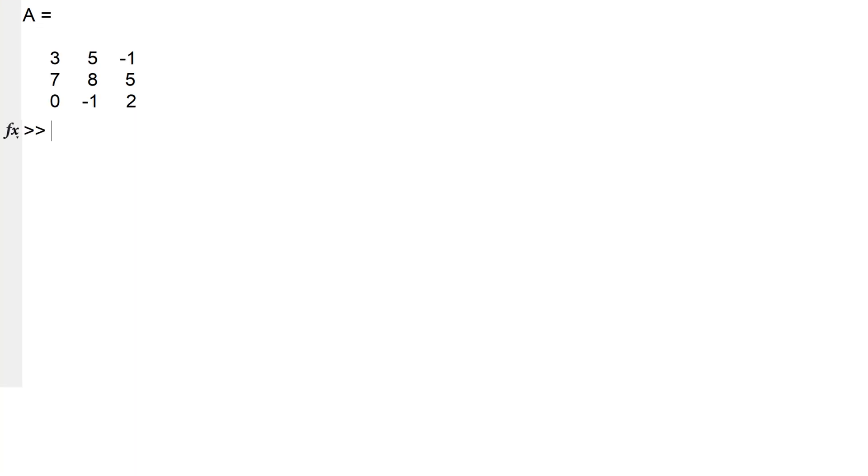You can also use square brackets or colon operator for multiple indices. For example, you can use square brackets 1 and 3 to access the first and third row, comma 3 for the third column, to see minus 1 and 2. You can also use 1 colon 2 for the first two rows, comma 3 for the third column. You can also use colon only, and it means it will select the entire row. You can also use this approach for the column indices.